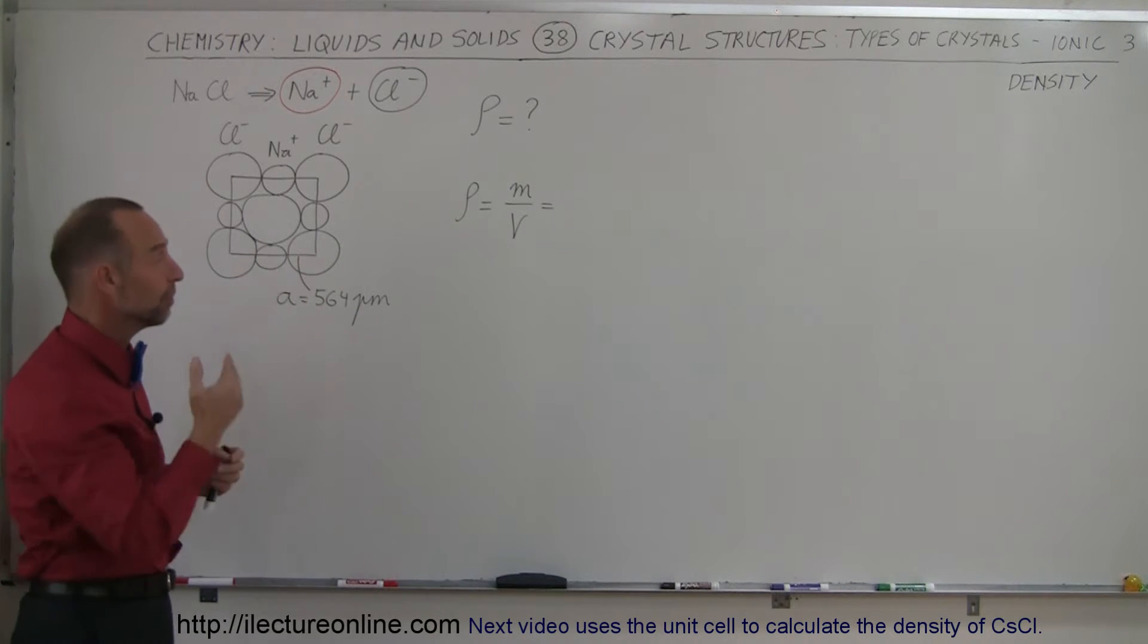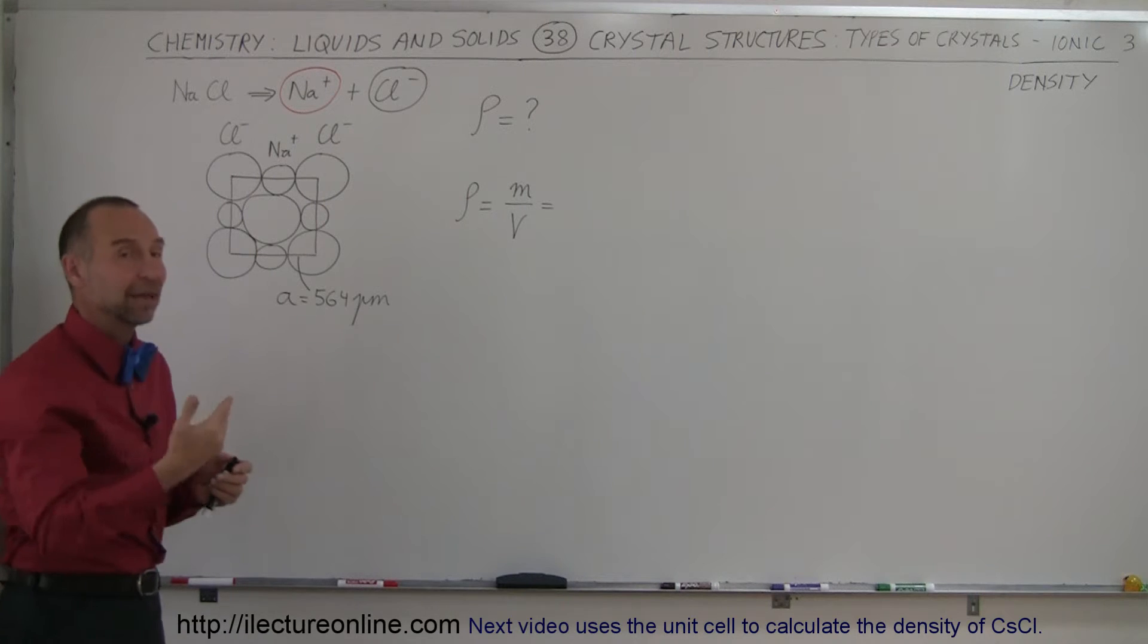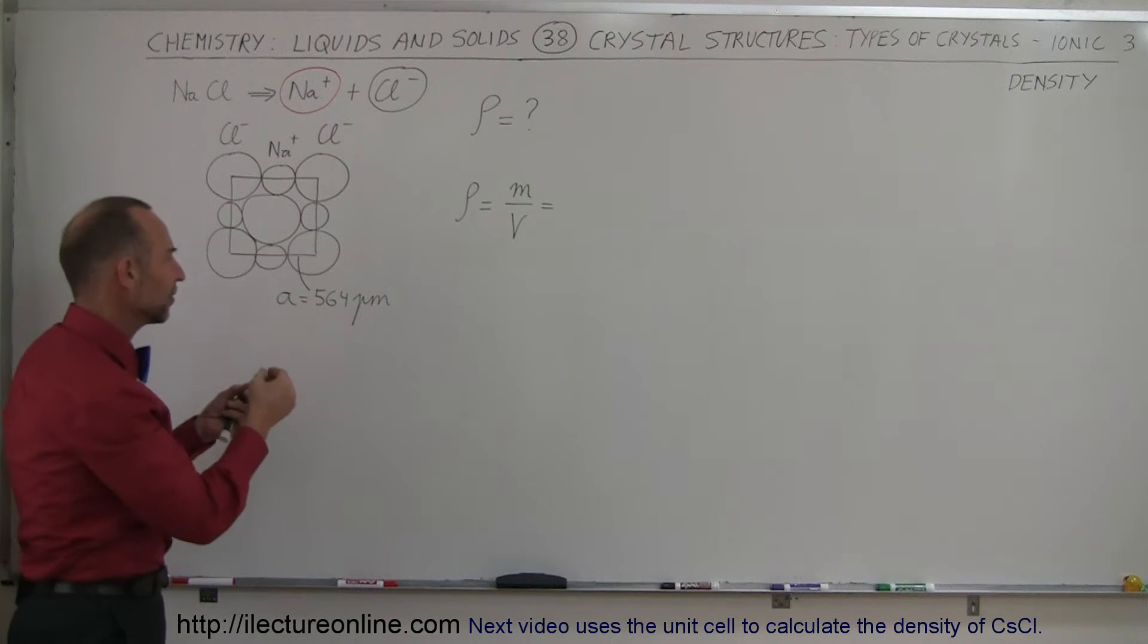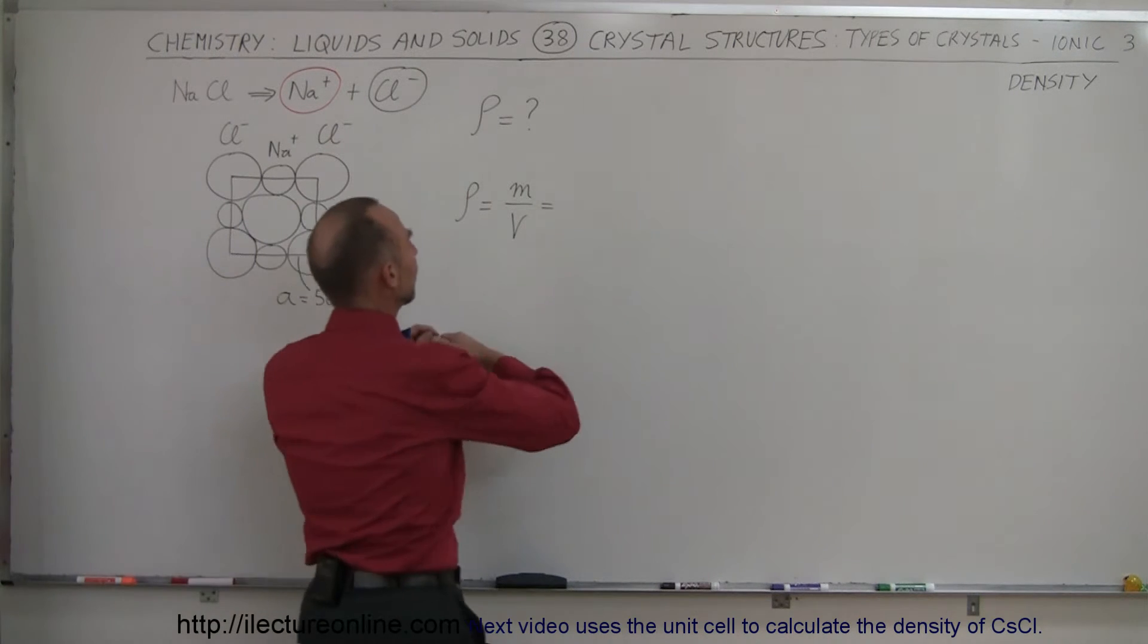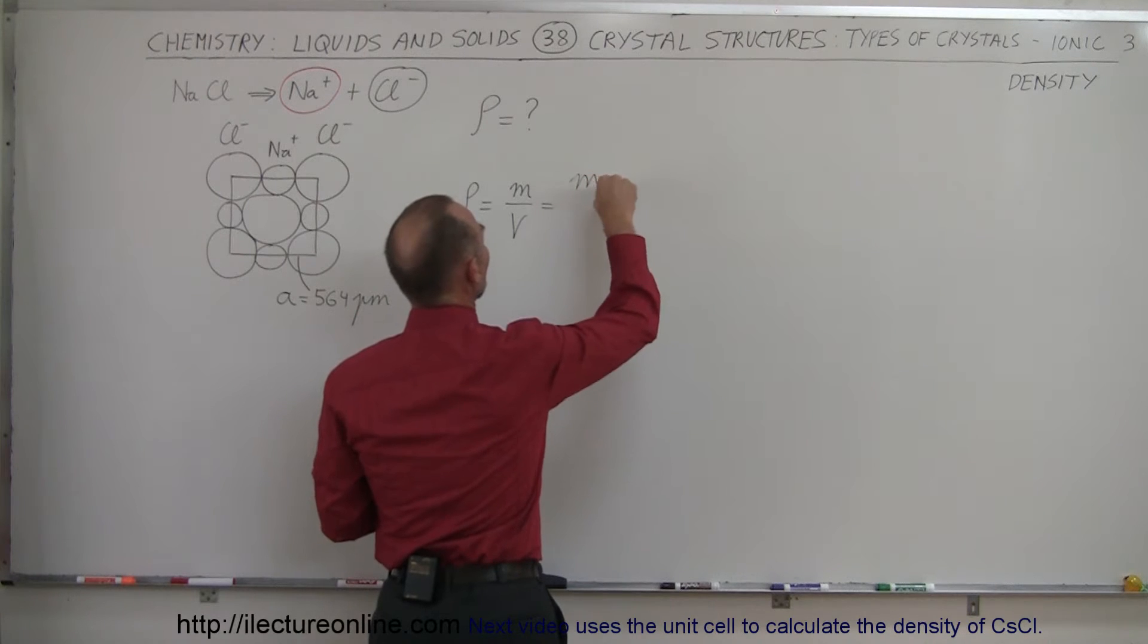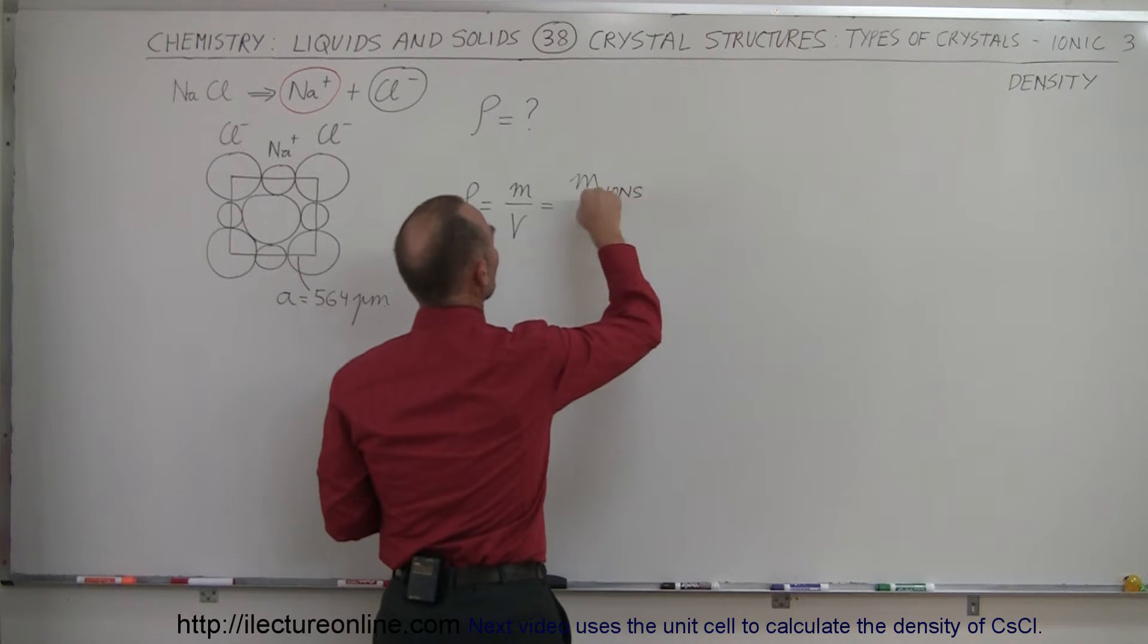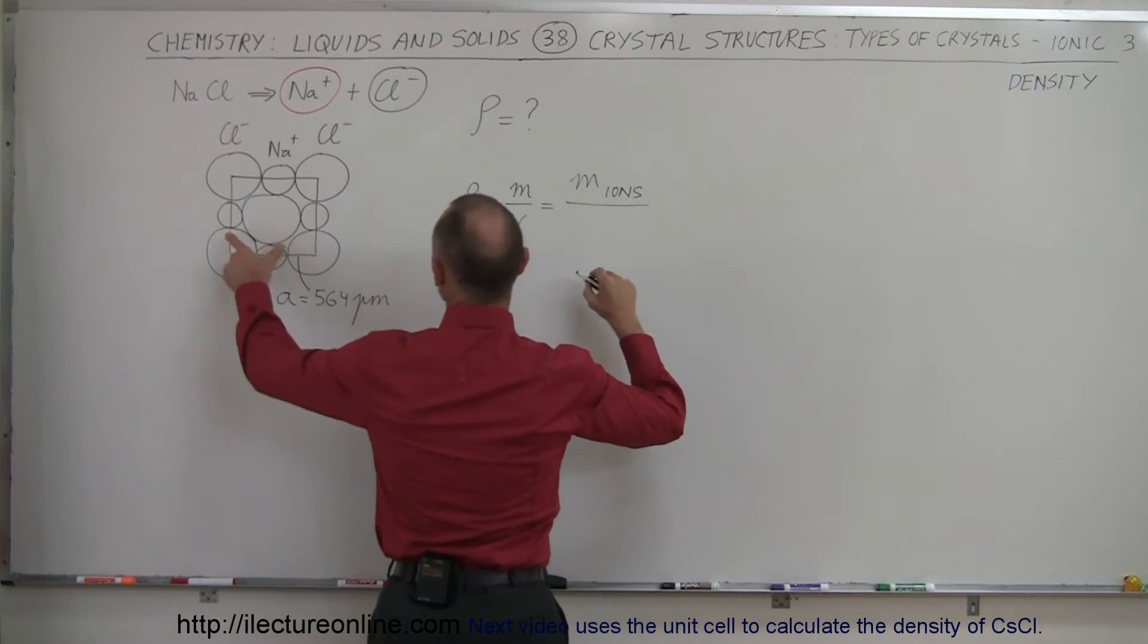So to find the density we need to know the mass divided by the volume and the mass is going to be the mass of the ions in the unit cell. This is equal to the mass of the ions per volume of the unit cell.